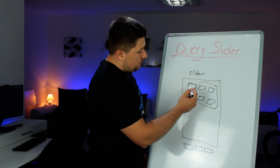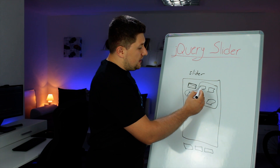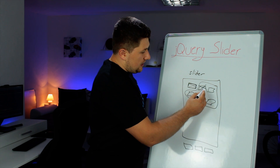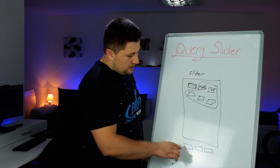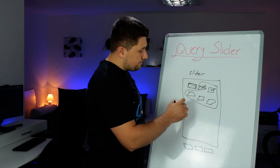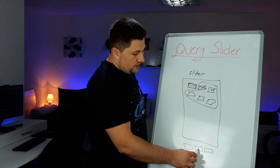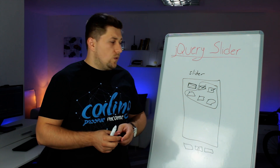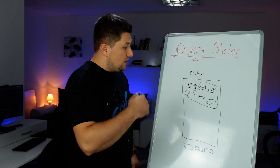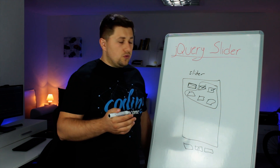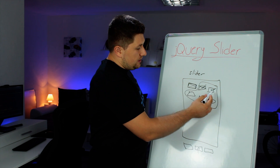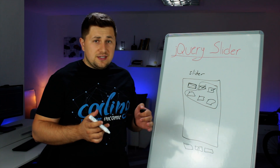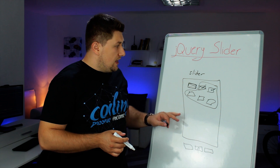When someone presses the Next button, we hide the current image and show the next one. If they press Next again, we hide that and show the next, and so on. The same thing works with the Previous button. With the Slideshow button, every second or whatever interval you want, we just switch the image — hide, show, hide, show. It's extremely basic.